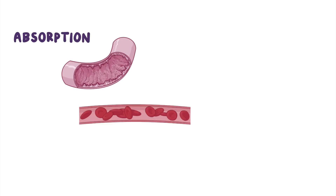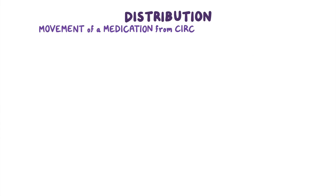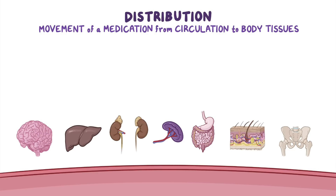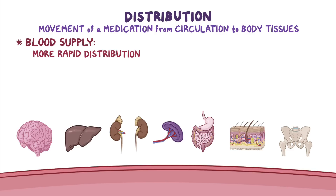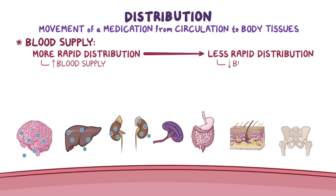Once absorption has been completed, we move to the distribution of the medication. Distribution is the movement of a medication from the circulation into the body tissues. The rate and extent of distribution depends on several factors. One of them is blood supply to different tissues — medications will be more rapidly distributed to body tissues that receive large amounts of blood supply, like the brain, liver, and kidneys, and less to the tissues with poor blood supply, like the skin and adipose tissue.